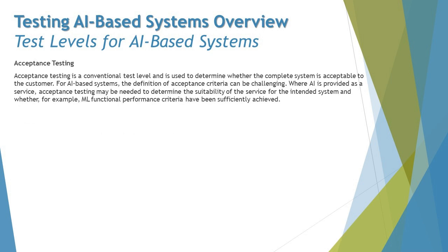The final level is acceptance testing, which is the conventional test level used to determine whether the complete system is acceptable to the customer. For AI-based systems, defining acceptance criteria can be challenging — we will discuss acceptance criteria in the next chapter. Where AI is provided as a service, acceptance testing may be needed to determine the suitability of the service for the intended system.